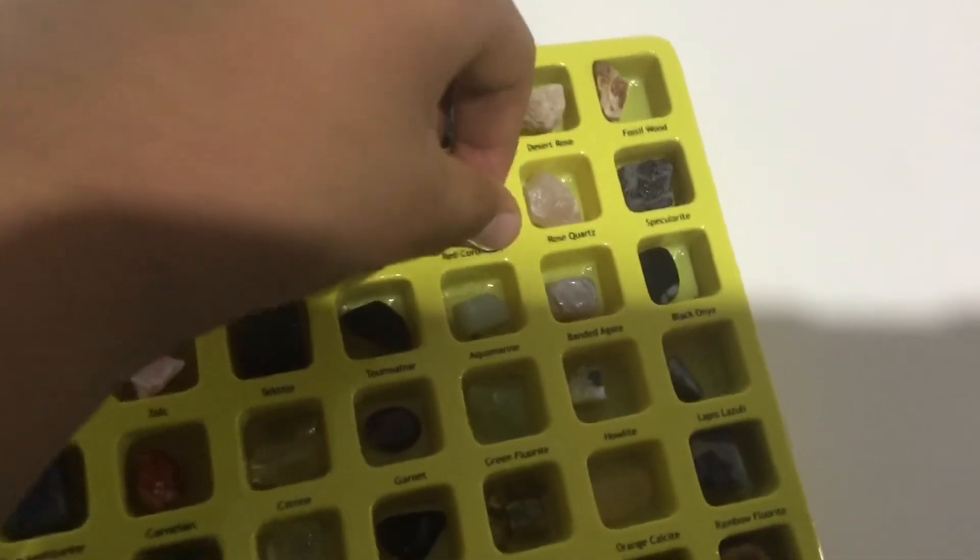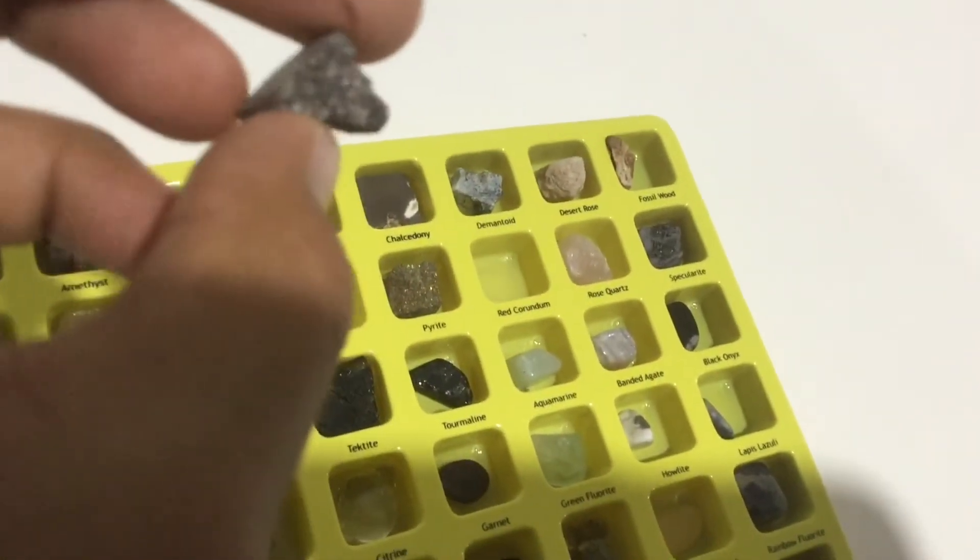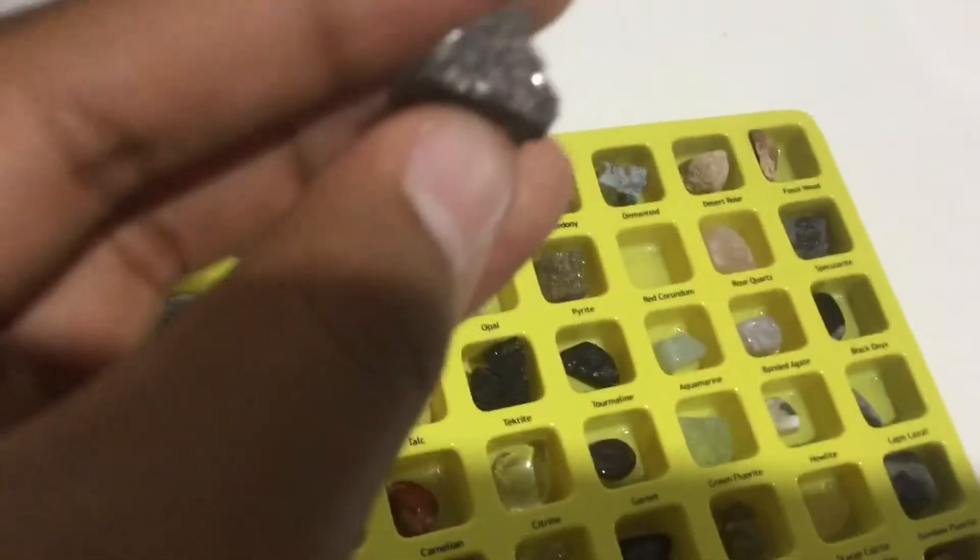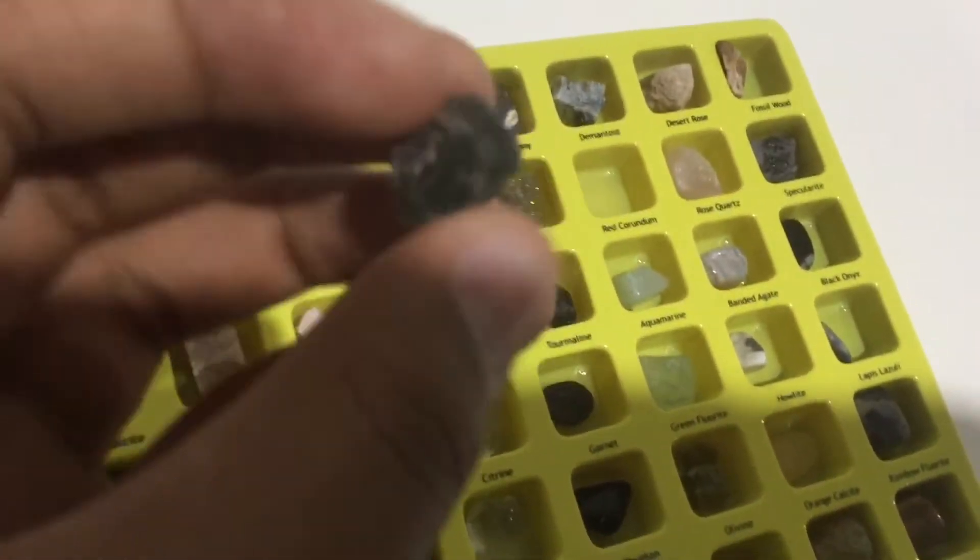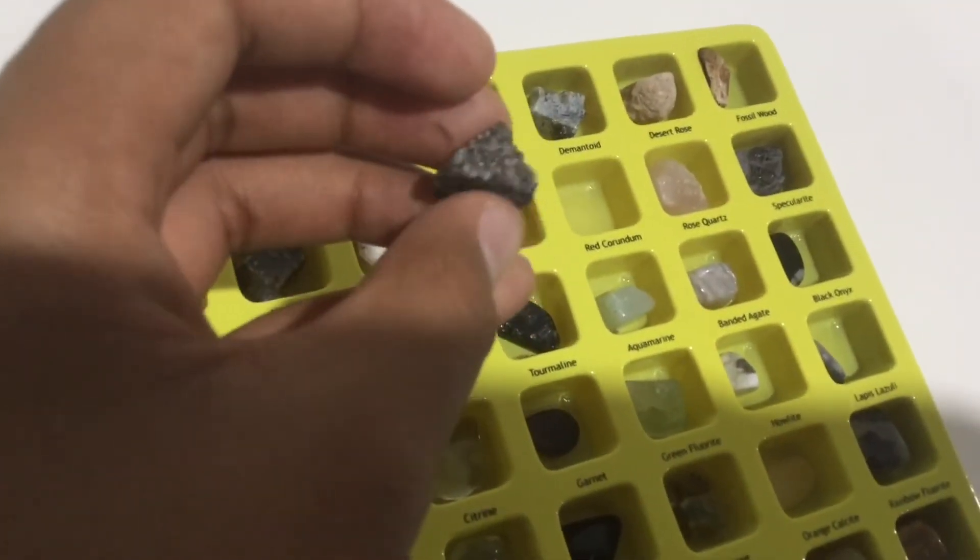Next one is red corundum. Talked about this. It's the third hardest between diamond and another one I forgot. It's so sparkly and has some red in it if you can see.